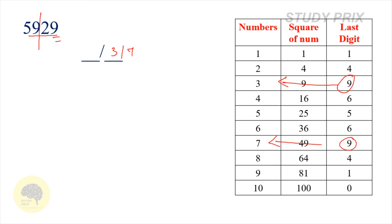The second step is to ignore the last 2 digits. The first two digits are 59. Come to the table and find whether 59 lies in between 49 and 64. The corresponding numbers are 7 and 8. We take the least number, which is 7. Therefore the answer must start with 7.